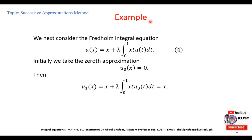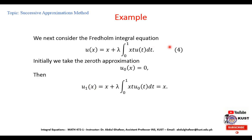Now we consider a specific example to test the Successive Approximations method. We take equation 4, where k(x,t) = xt is a separable kernel. Initially, we take u0(x) = 0. According to the method, u1(x) = x + λ∫[0 to 1] xt · u0(t) dt. Since u0(t) = 0, the integral vanishes and we obtain u1(x) = x.